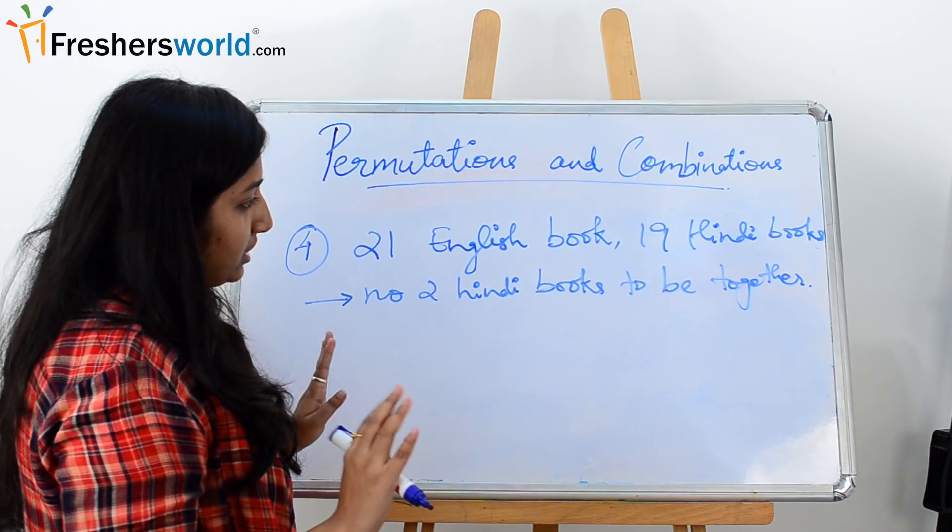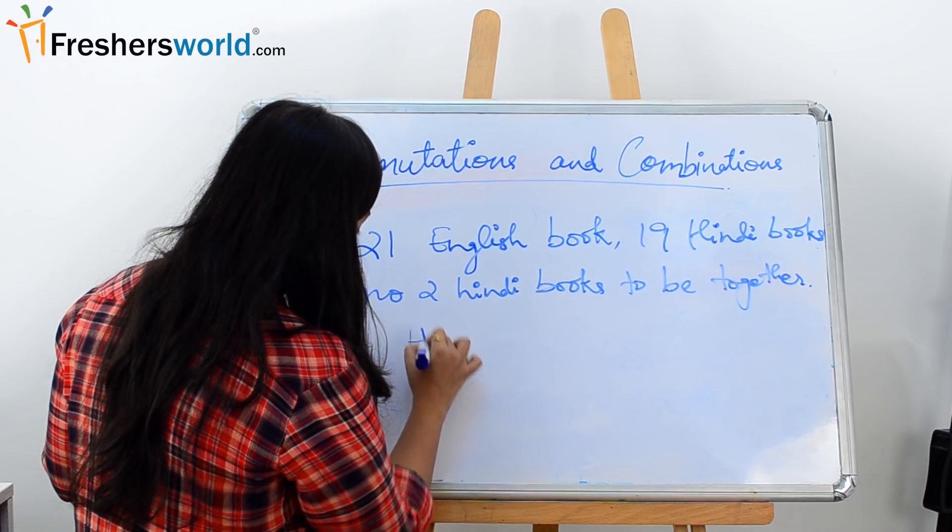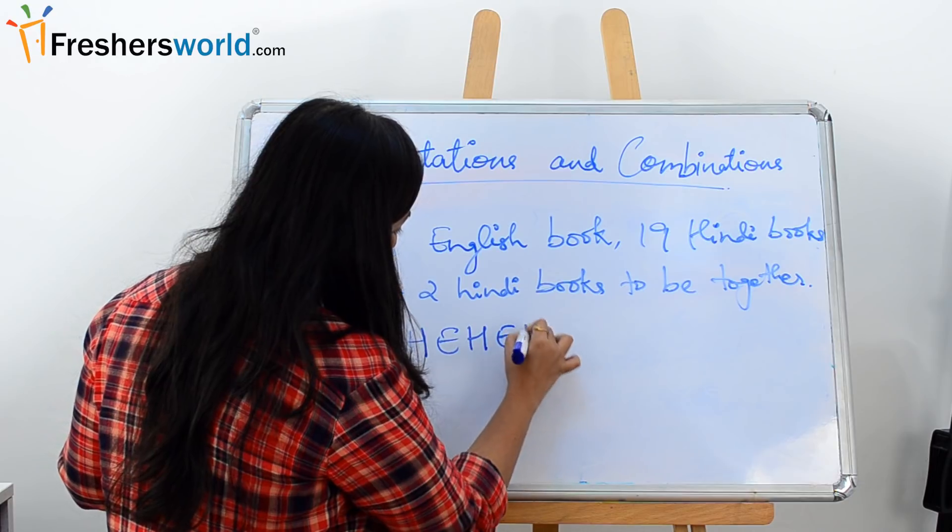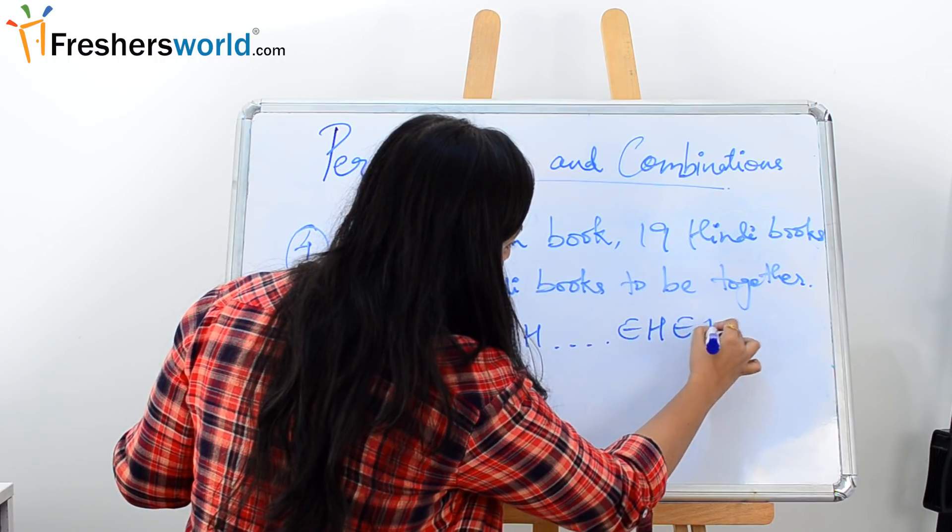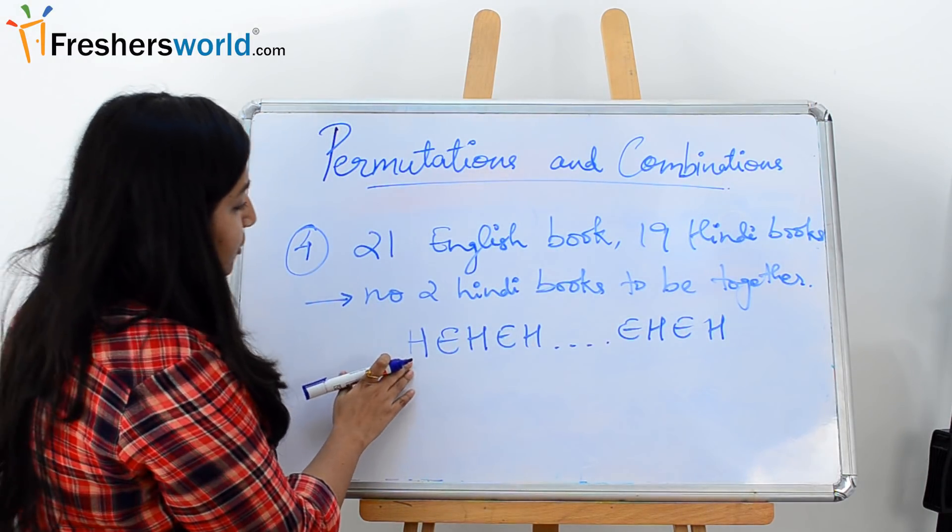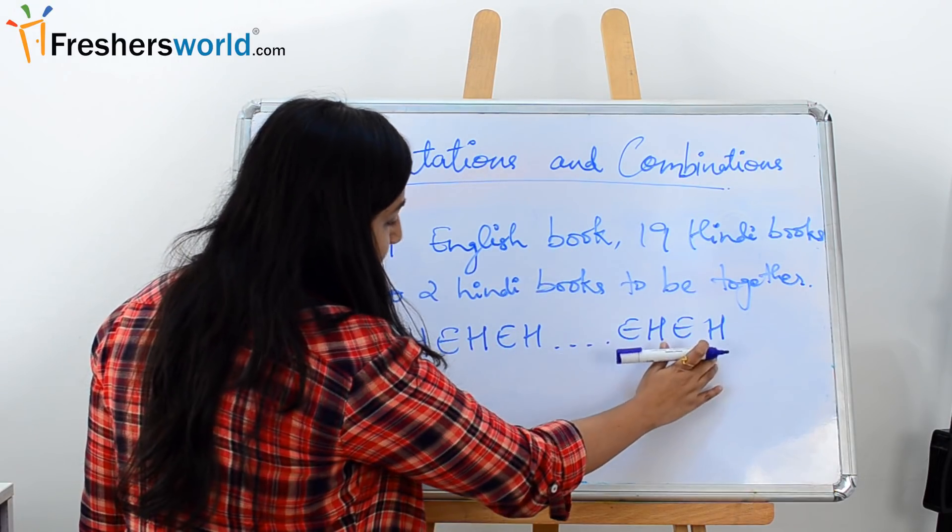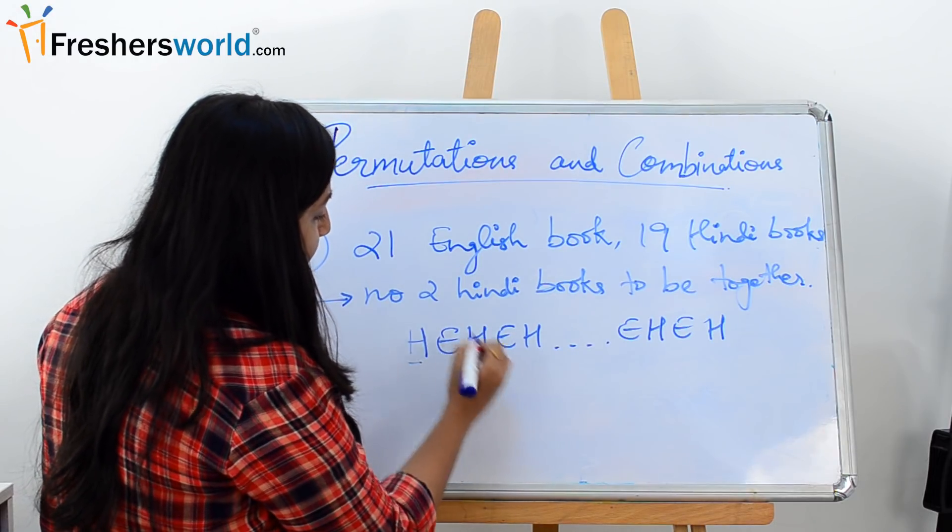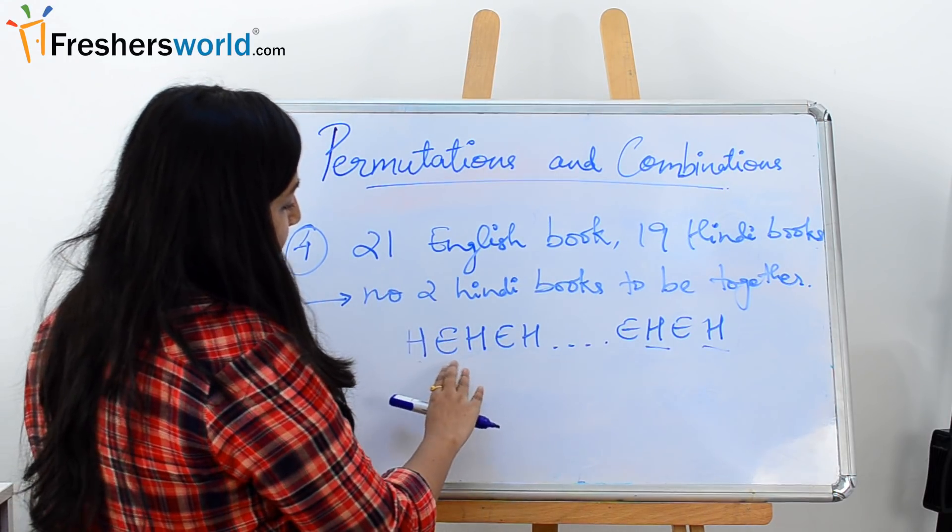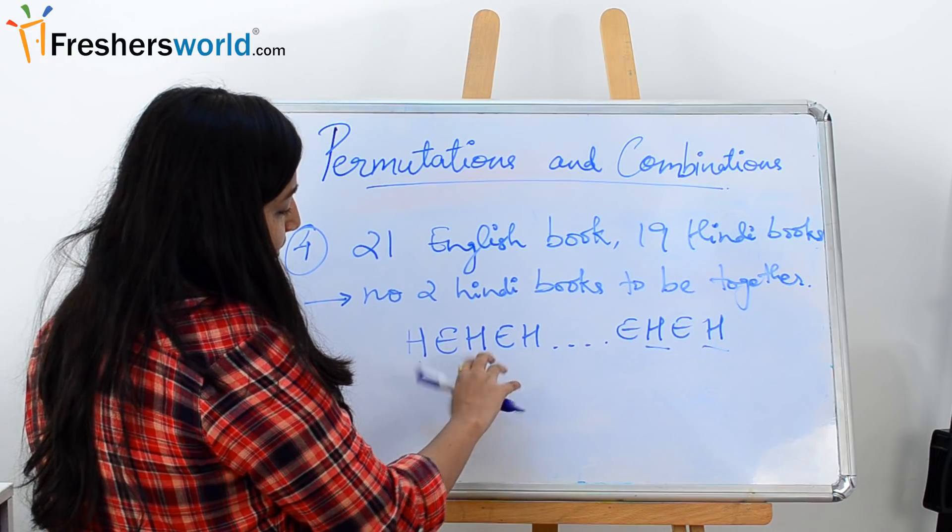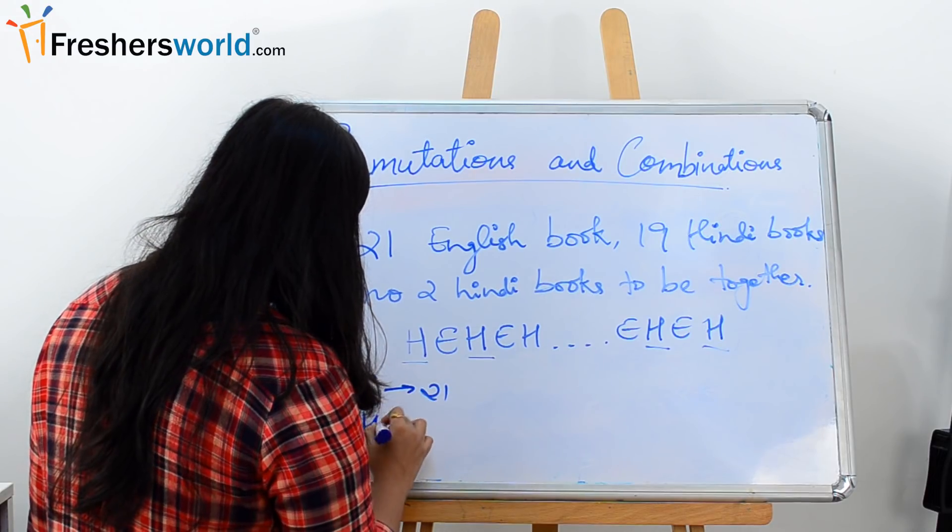So let's see. Let's try to arrange them. So here, this H denotes Hindi books and E denotes English books. So you can see we can only arrange it in this way so that no two Hindi books are together. Always there will be an English book in between them. You see, English books are 21. So the number of places which are marked by H will be 22. So E is 21 and H is 22.